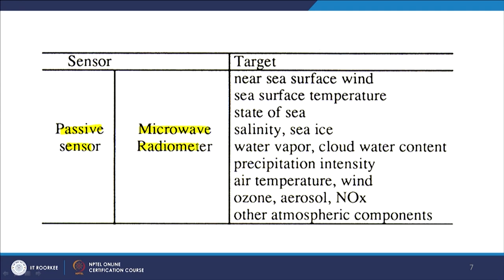The main sensor here is the microwave radiometer. Targets and application areas include: near sea surface winds, sea surface temperature (SST) estimations, sea surface condition (calm or volatile), salinity, sea ice, water vapor, cloud water content, and precipitation intensity — all being studied using passive microwave remote sensing. Air temperature, wind, ozone, aerosol, NO2, and other atmospheric components are also studied. An example will be shown where passive microwave data was used to estimate snow depth in part of the Himalaya.